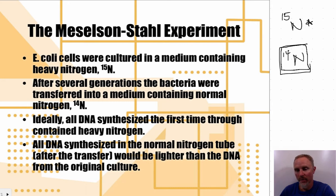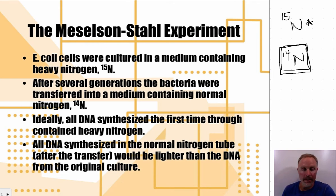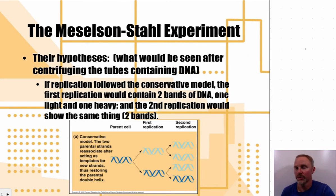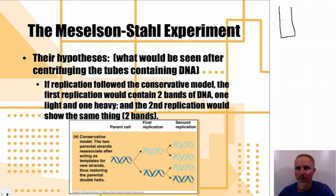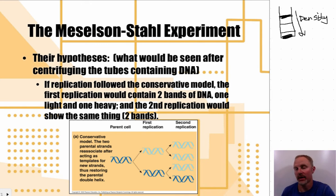During DNA synthesis, nitrogen-14 would be incorporated into any new DNA. They chose E. coli cells that replicate every 20 minutes, making for a relatively quick experiment. The cells were transferred to centrifuge tubes and spun at nearly 45,000 rotations per minute for about 20 hours. In a centrifuge, contents layer out according to density — denser material settles toward the bottom, less dense material stays near the top. They invented a tool called a microdensitometer to measure density differences.